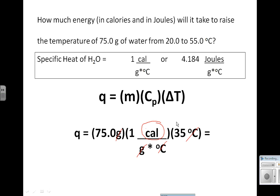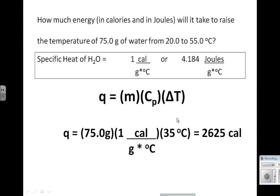So 75 times 1 times 35 gives us an answer of 2,625 calories. But again, we want to put that in significant figures. So we're going to round up because it's followed by five, and our final answer will be 2,630 calories.